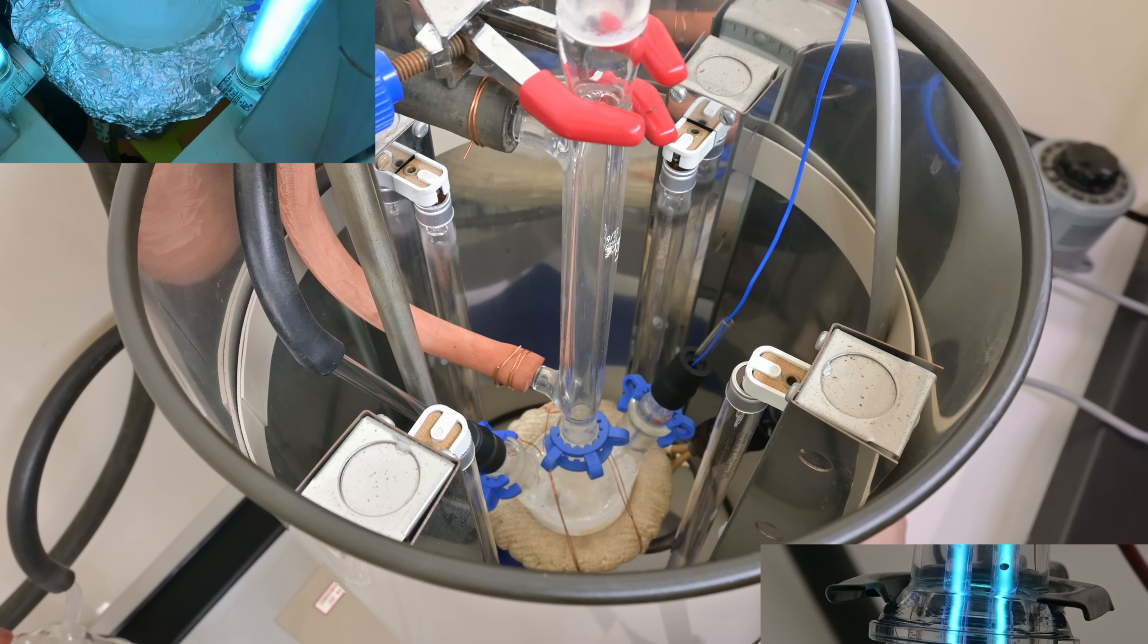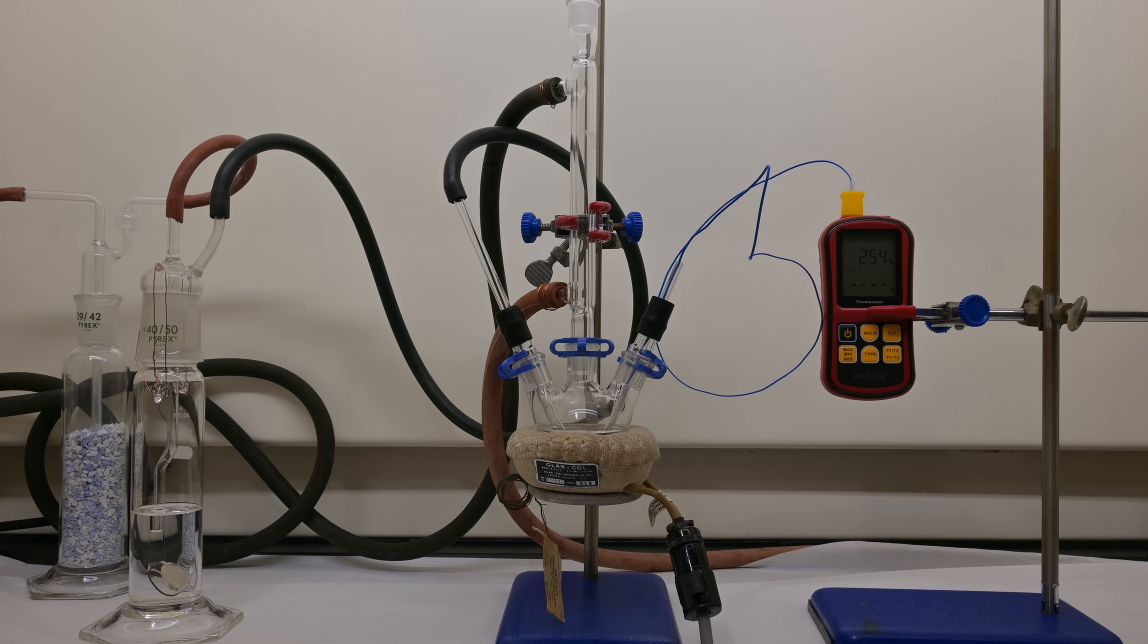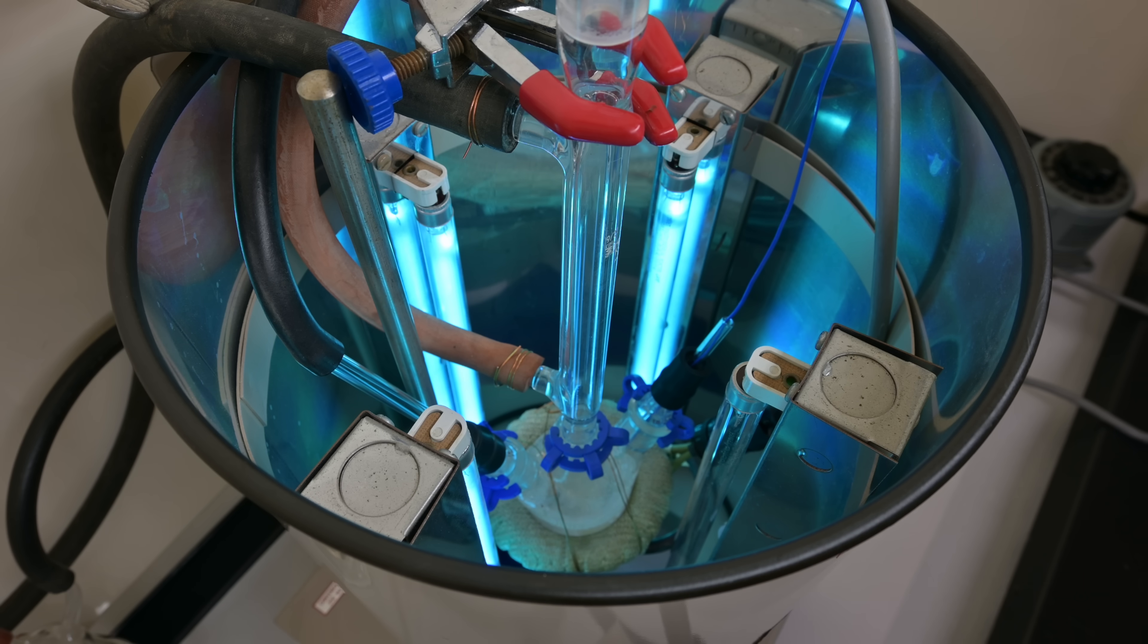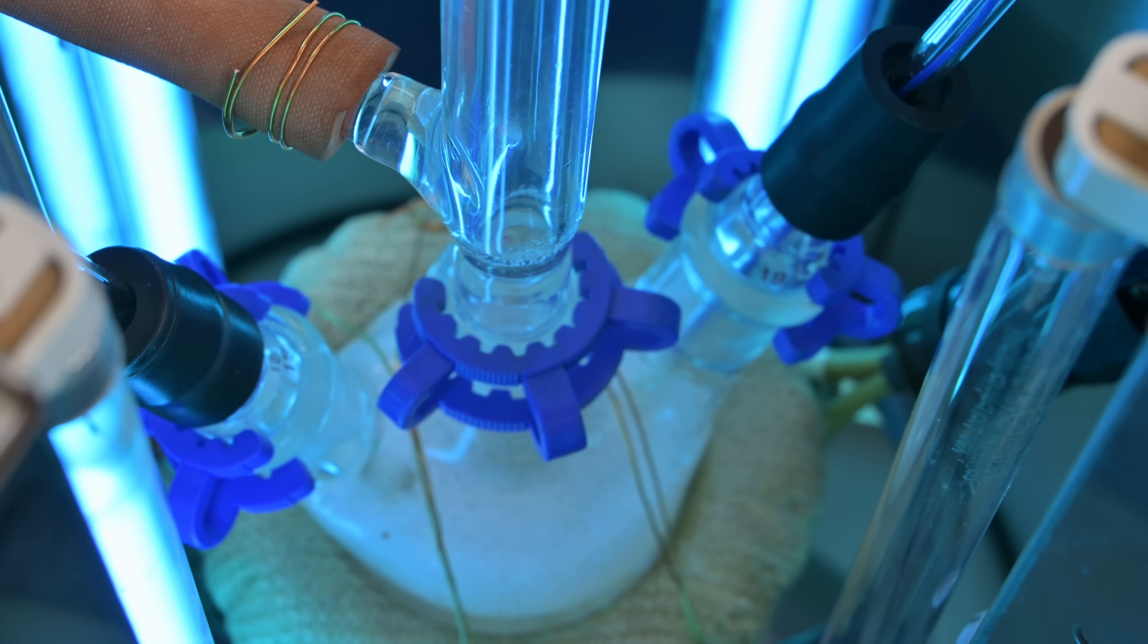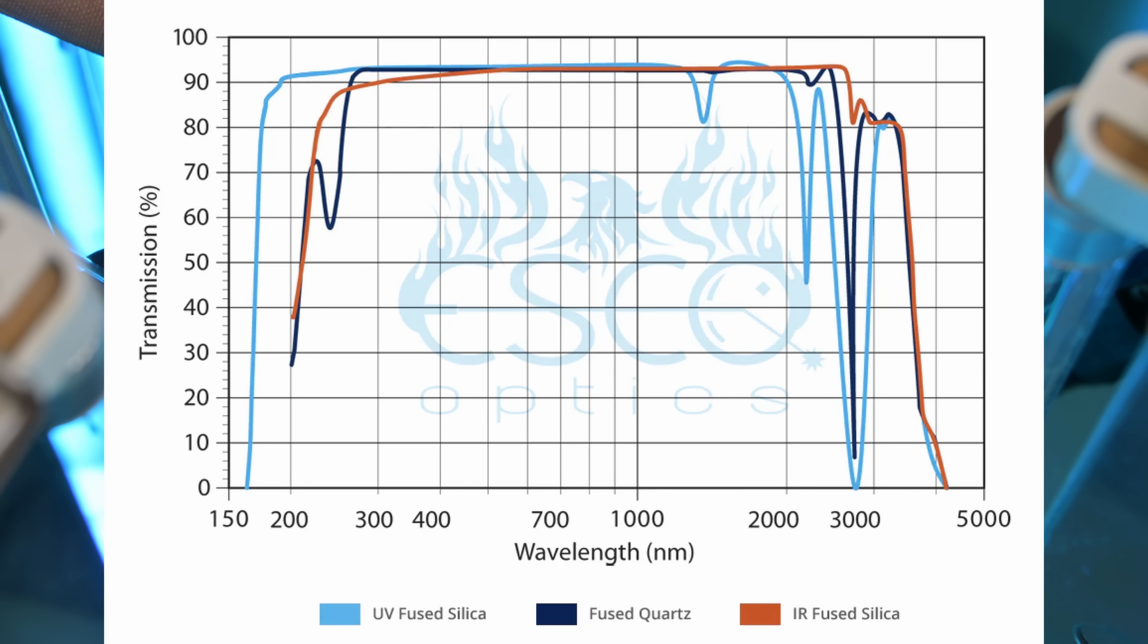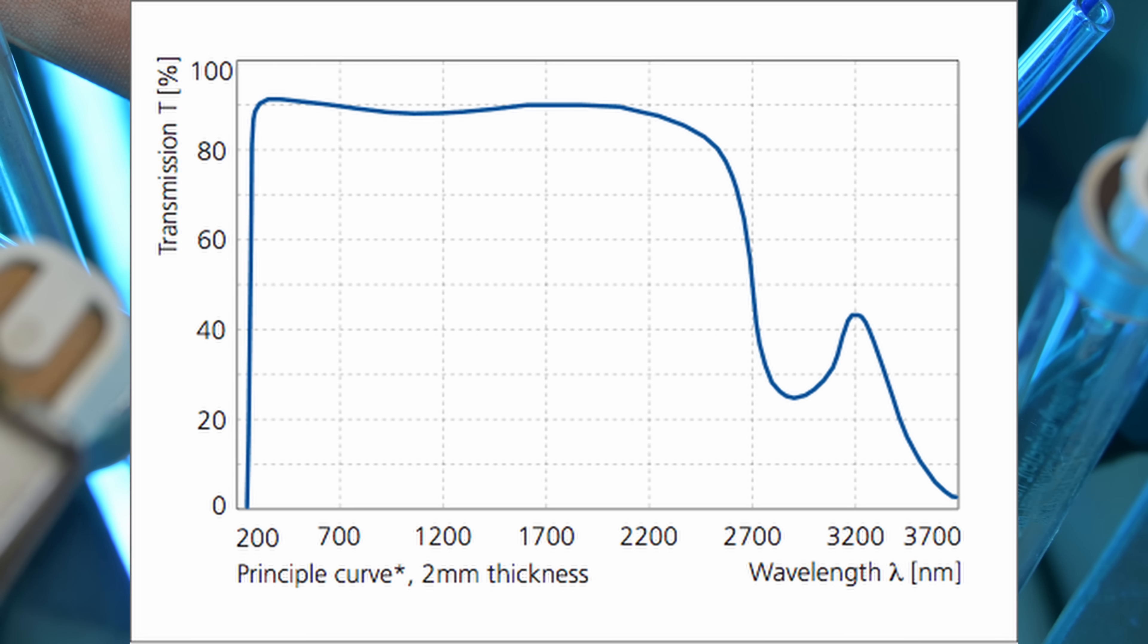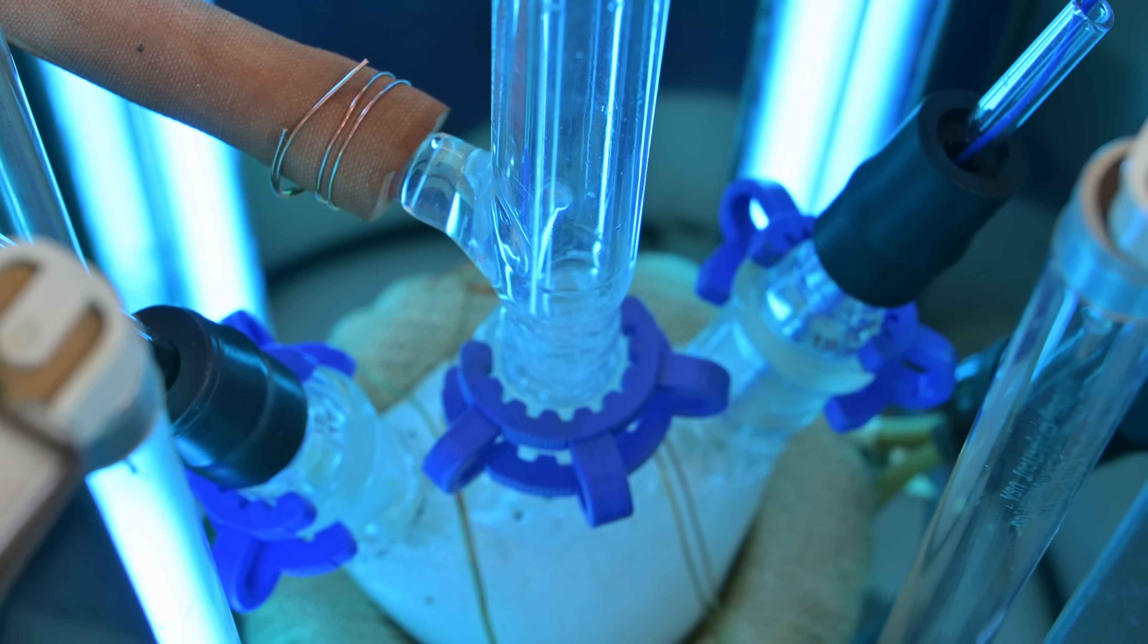I ended up having to attempt this reaction three times to finally get a successful run with a setup that worked well. In my first attempt, I used a three neck flask within a photochemical reactor. The photochemical reactor produces UV light which supplies the energy to create the radicals of chlorine. The problem occurs here is that I don't have quartz glass flasks. I only have borosilicate.